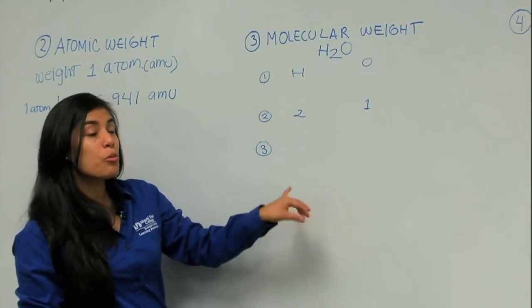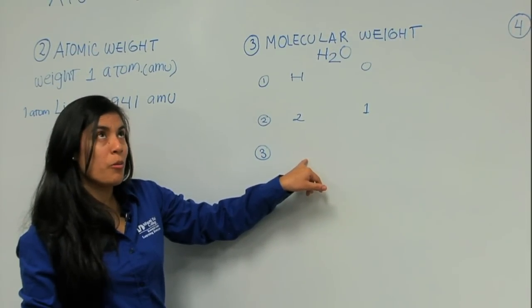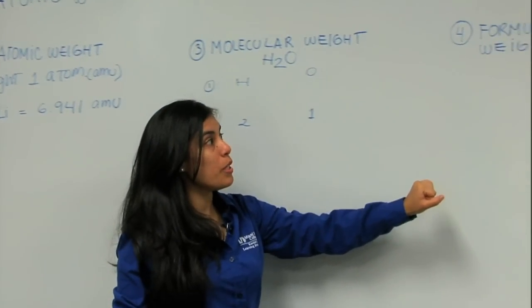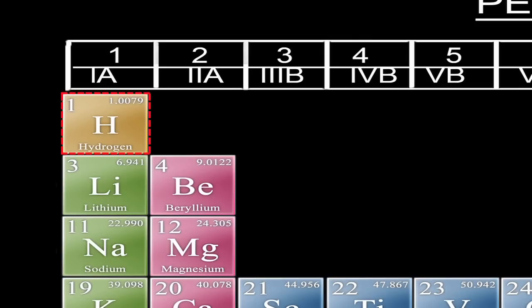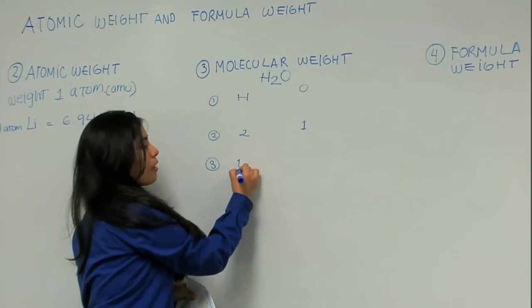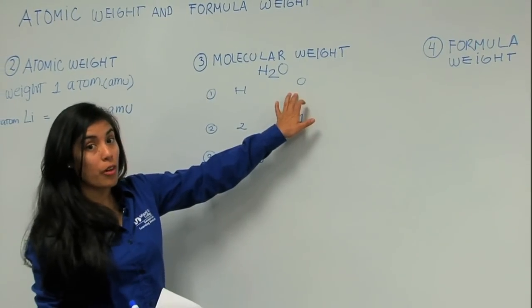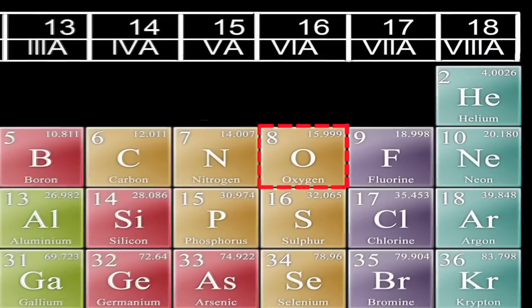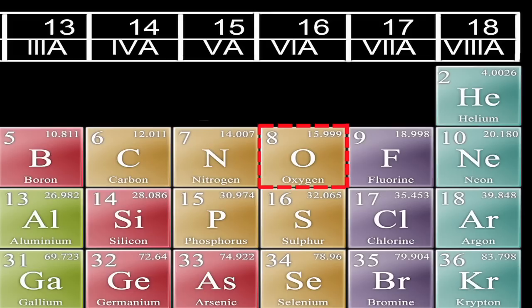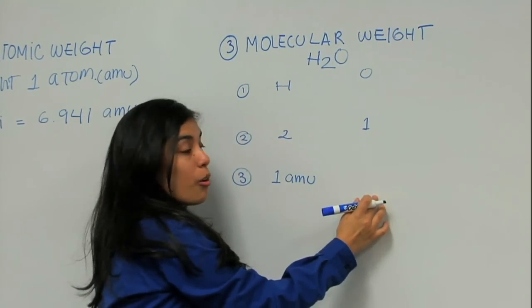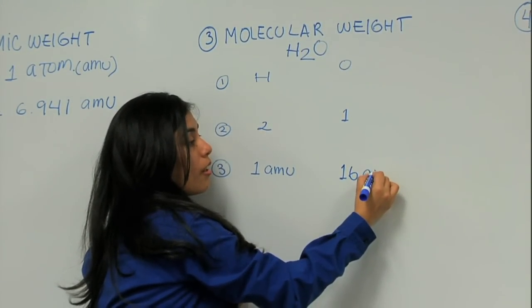Third step, I have to write down the atomic weight of each of these atoms. So the atomic weight of hydrogen is going to be 1.00794, so it's 1 AMU. And the atomic weight of oxygen, if we look at the table, it's going to be 15.9994. But for this problem, we're just going to round it to 16. So the atomic weight of oxygen is going to be 16 AMU.